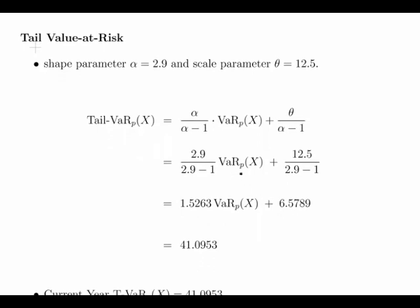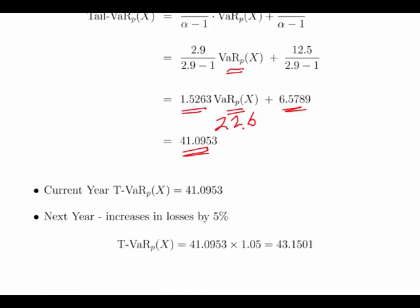We calculate the tail value at risk using our value of the VaR. Alpha divided by alpha minus one: alpha here is 2.9, 2.9 divided by 1.9 gives us 1.5263. VaR is 22.6. Theta divided by alpha minus 1 is 12.5 divided by 2.9 minus 1, which is 6.5789. We should get an answer of 41.0953.